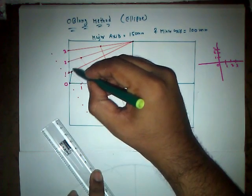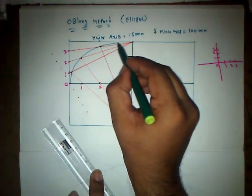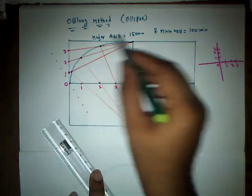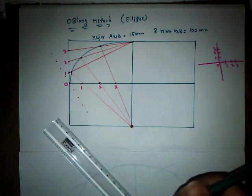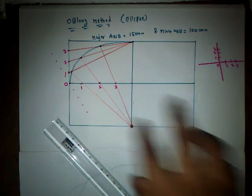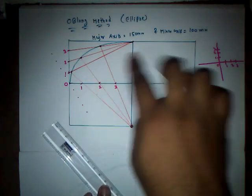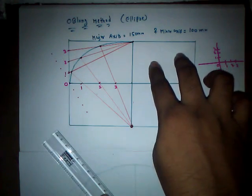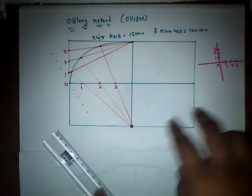We can finally get the curve by joining these points. Join all these points with freehand — we got one fourth of the curve. In the same manner, we have to perform the same steps in block 2, block 3, and block 4.